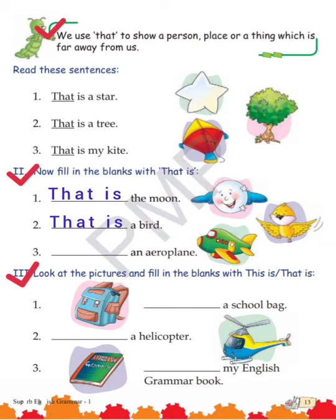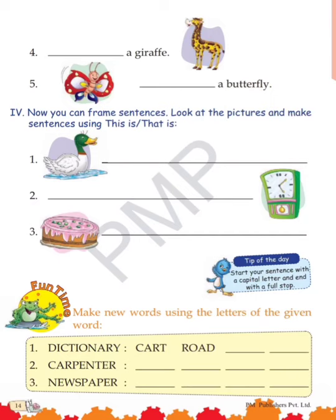First one — the picture is drawn before the line begins, that means it is near to us, so we write 'This is a school bag'. Second one — 'That is a helicopter', because the helicopter is drawn after the line ends. Third one — 'This is my English grammar book'. Fourth one — 'That is a giraffe'.